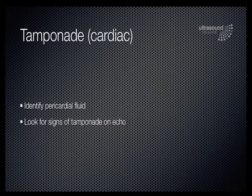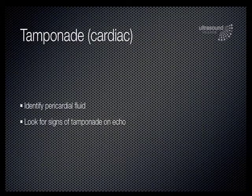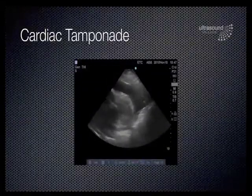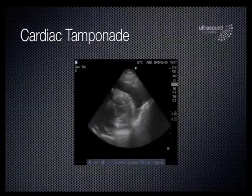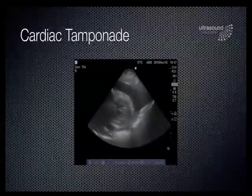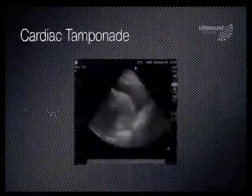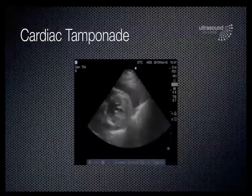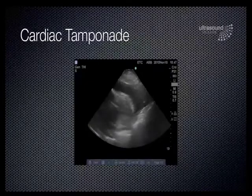Cardiac tamponade can be identified on echocardiography. The identification relies on presence of pericardial fluid and echocardiographic signs of tamponade — namely right ventricular and right atrial collapse. This example is a scan performed during a 10-second pulse check of a patient in pulseless electrical activity, showing a large pericardial effusion and very poor left ventricular contraction. This particular case was a post-myocardial free wall rupture.